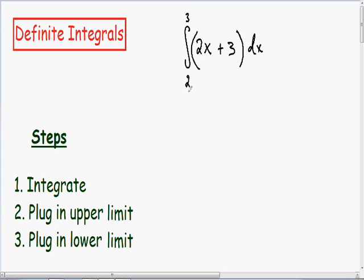Our lower limit is always the number below the integral. In this particular example it happens to be a 2. And our upper limit is always the number on top of the integral, and in this example which happens to be a 3.